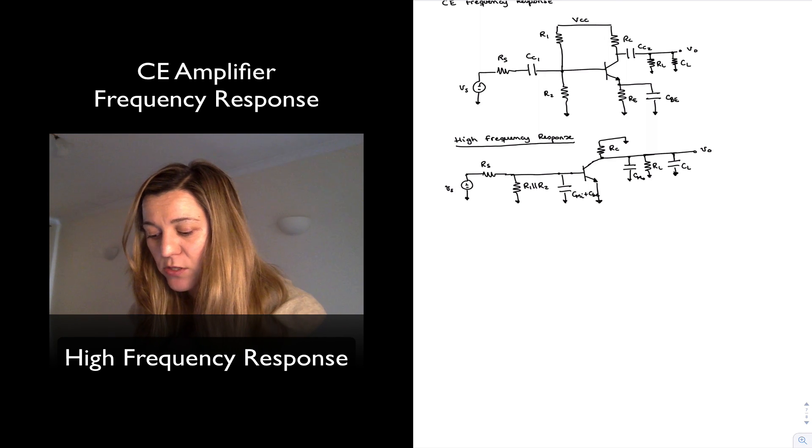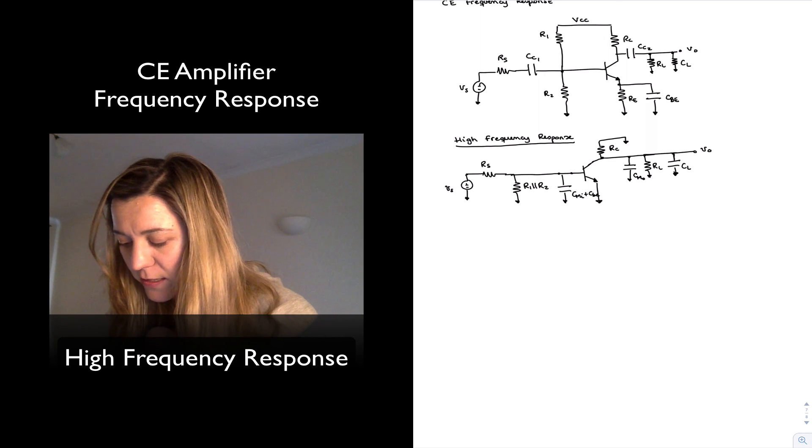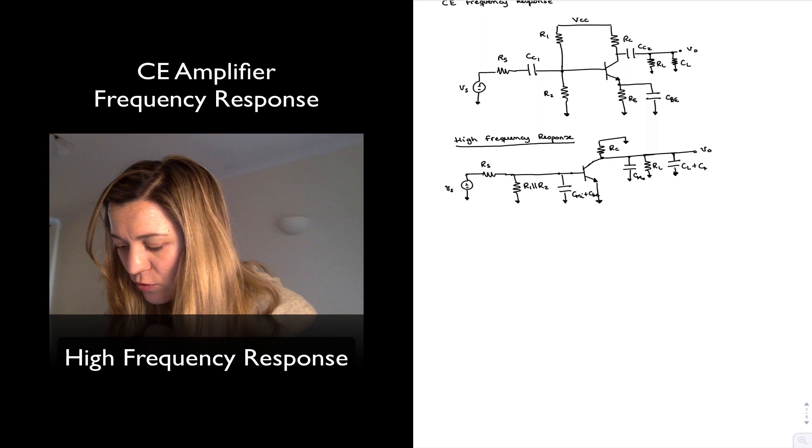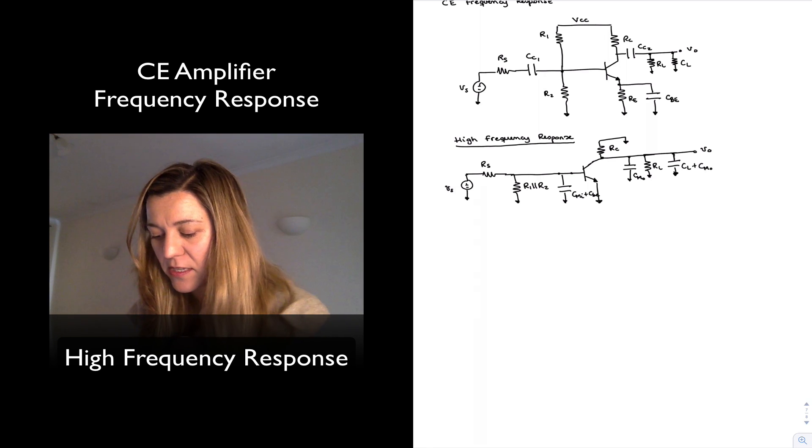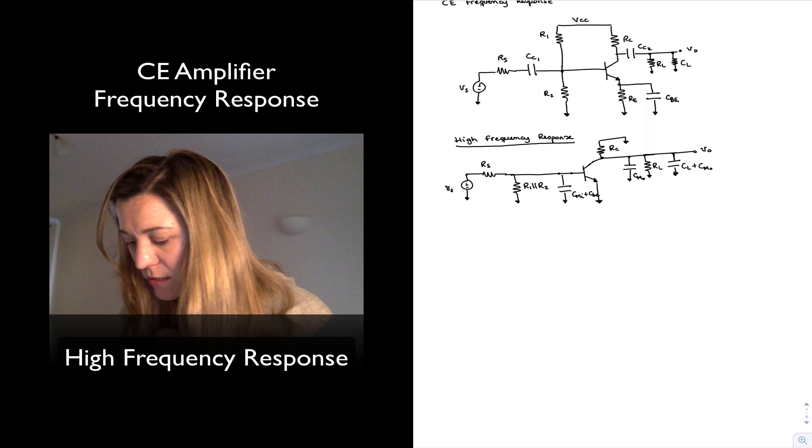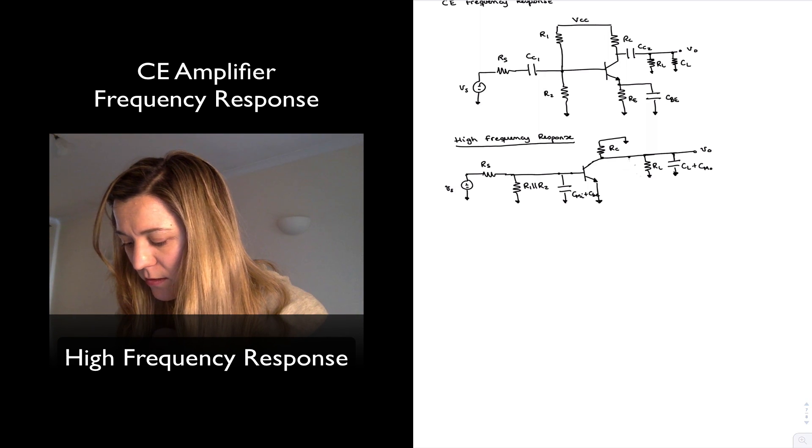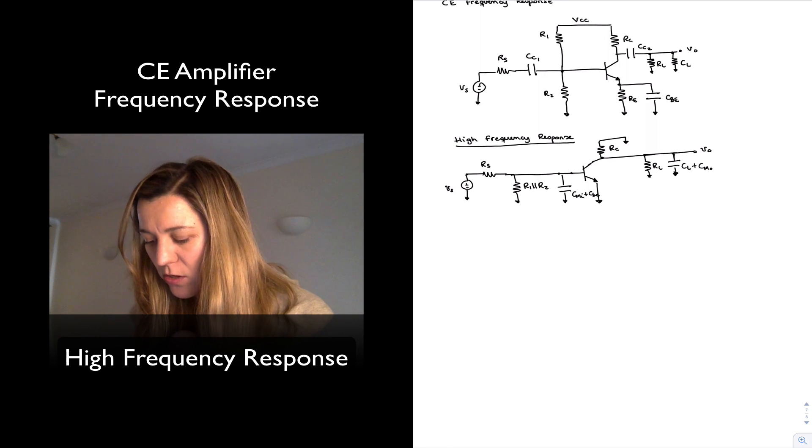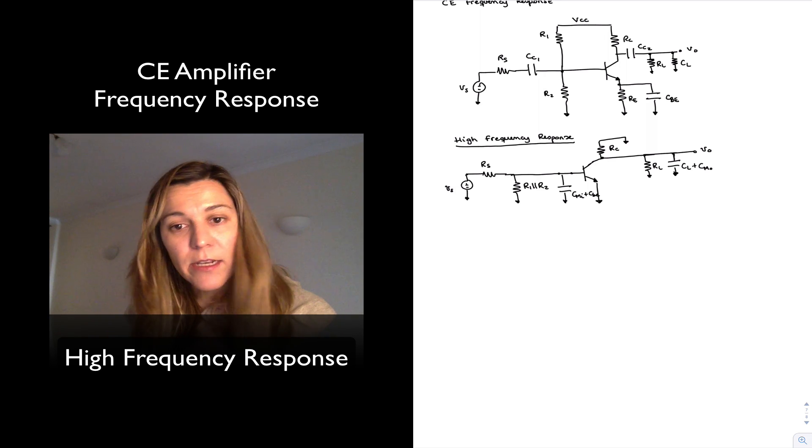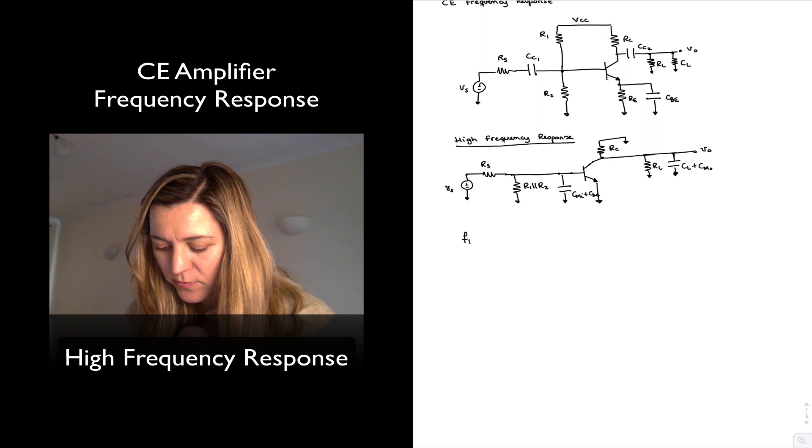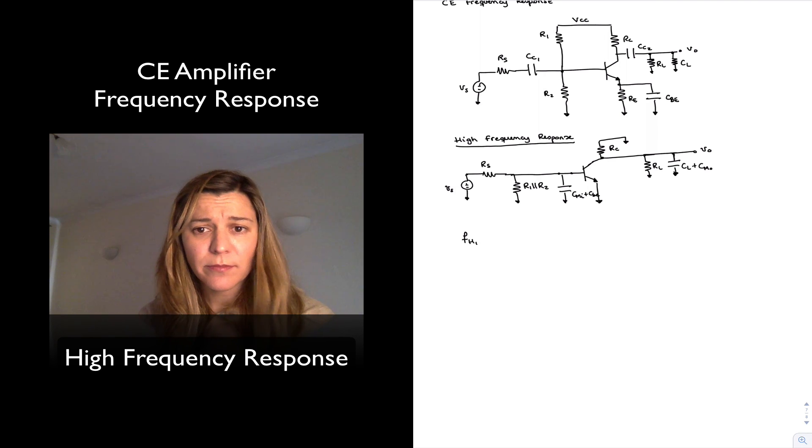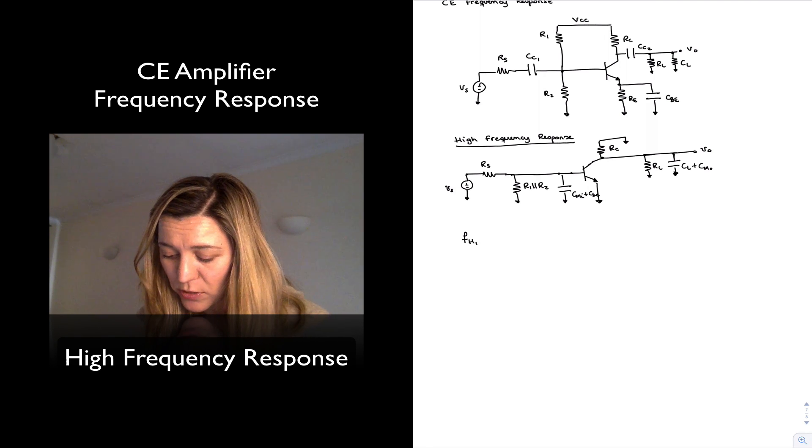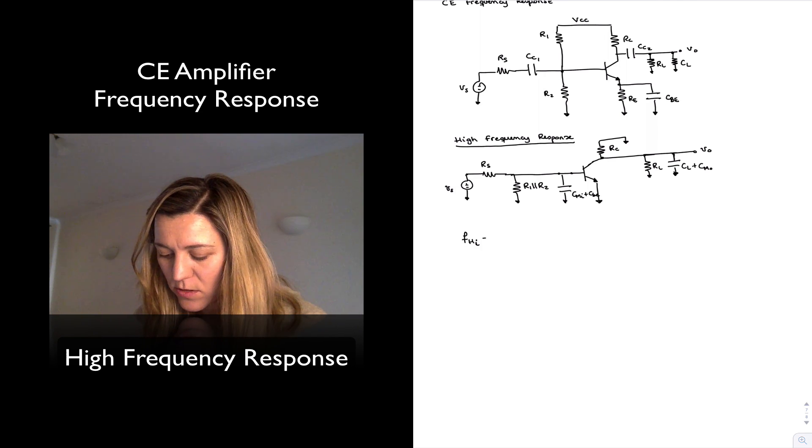And the same happens with CMO and CL. I can just combine them, and the parallel combination of two capacitors, the equivalent capacitance, is equal to the sum of those capacitances. So in all reality, you can see I have just two capacitors. So let's go ahead and consider FH1, which is going to be due to the input capacitance. So I'm just going to label it FHI for input.